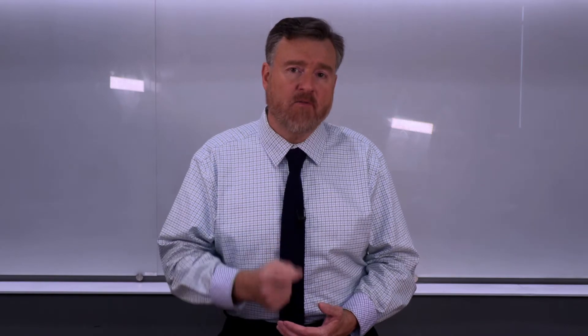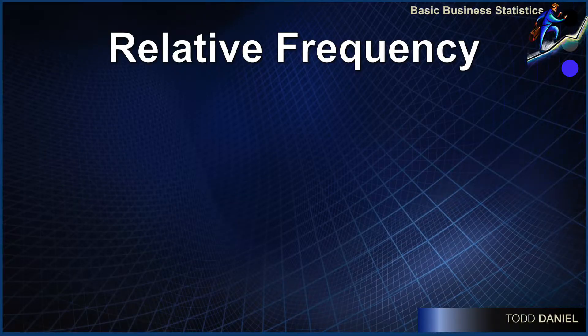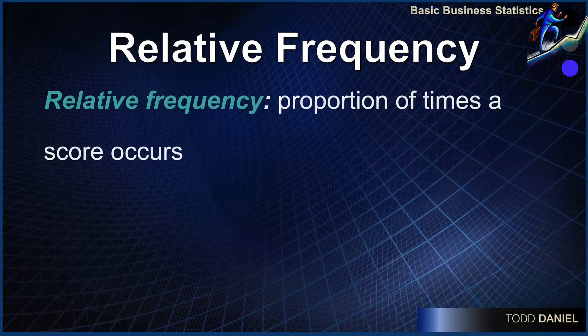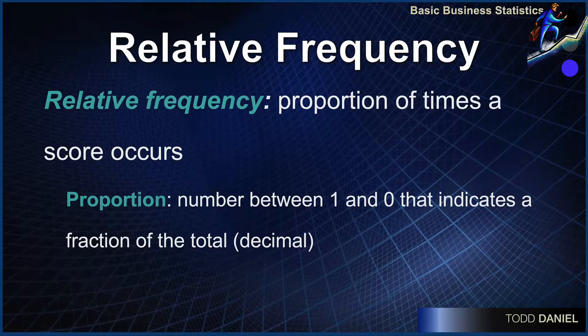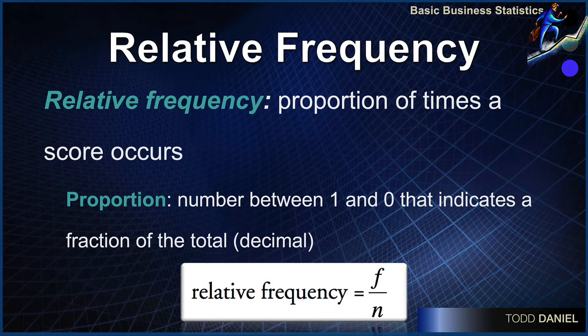The second form of frequency that we might use is the relative frequency. Relative frequency is the proportion of times that a score occurs in our data set. It is a number between 0 and 1 that indicates a fraction of the total, always presented as a decimal. Relative frequency can be calculated with this formula: simple frequency divided by N, where N is the total sample size.